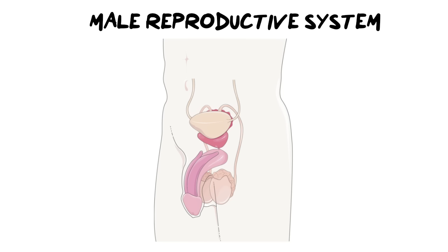The male reproductive system is also known as the urogenital system, which basically means the male reproductive system shares the same space as the urinary system. They both share the urethra — one for urination and the other for ejaculation. That overlap is different from females, where the two systems are in separate places, so it's important to keep that in mind.